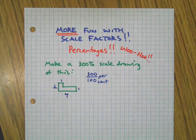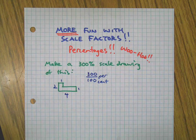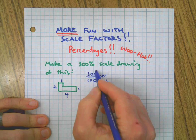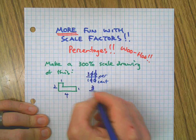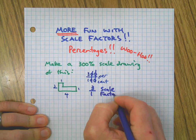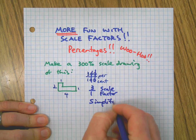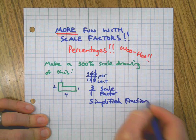The fraction bar is the word 'per' and 'cent' represents 100, so you can easily change any percentage into a fraction, which you want to do when we're working with scale factor. Now I can simplify this by dividing top and bottom by 100, and we end up with a scale factor which is a simplified fraction.